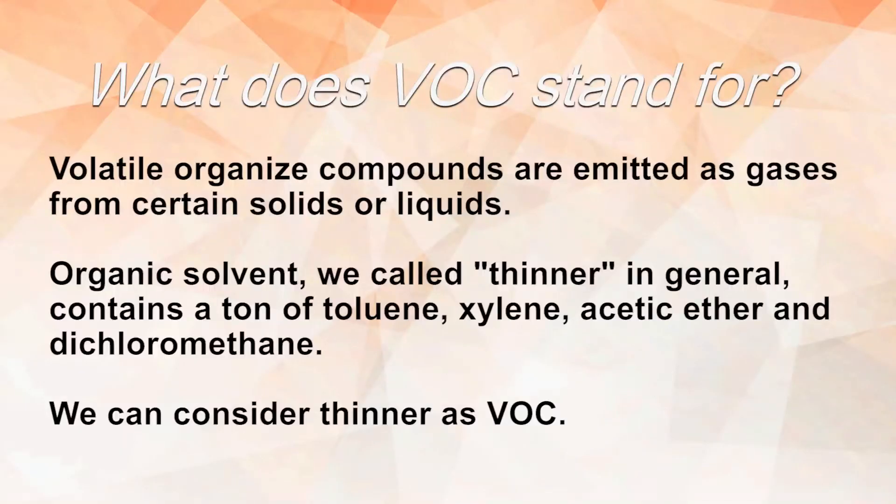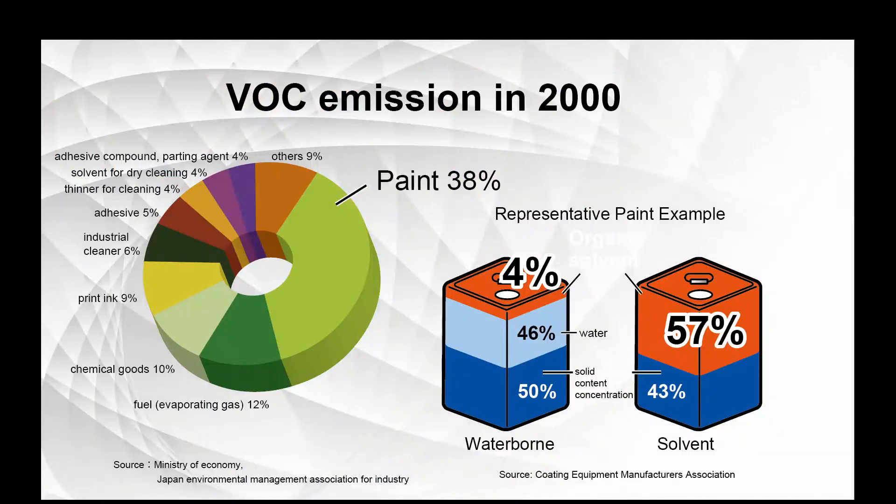Water-borne material draws attention as a low-impact coating material. Solvent material contains a lot of volatile organic compounds, so-called VOC, and can cause photochemical smog. VOC emission mainly comes from the finishing industry. Water-borne material includes exceptionally low VOC, so it will be an effective way to reduce VOC emission.